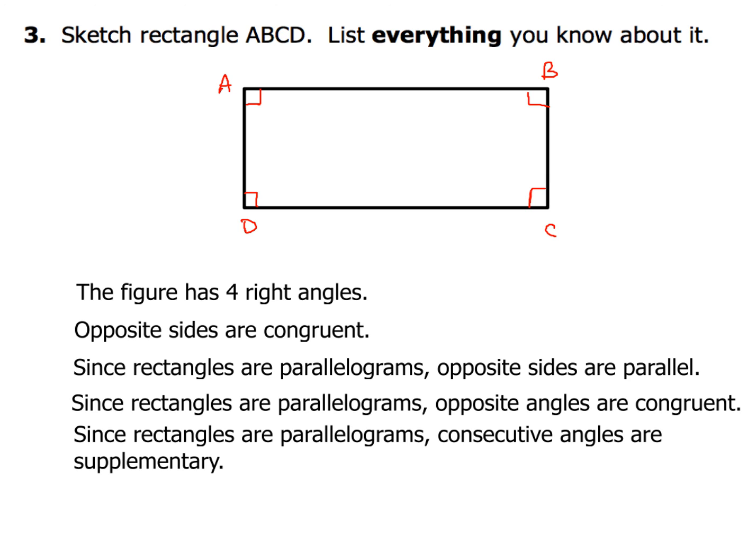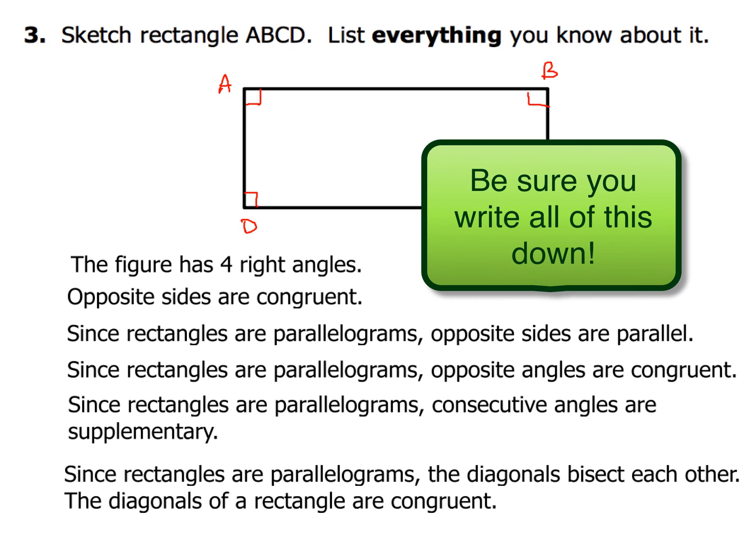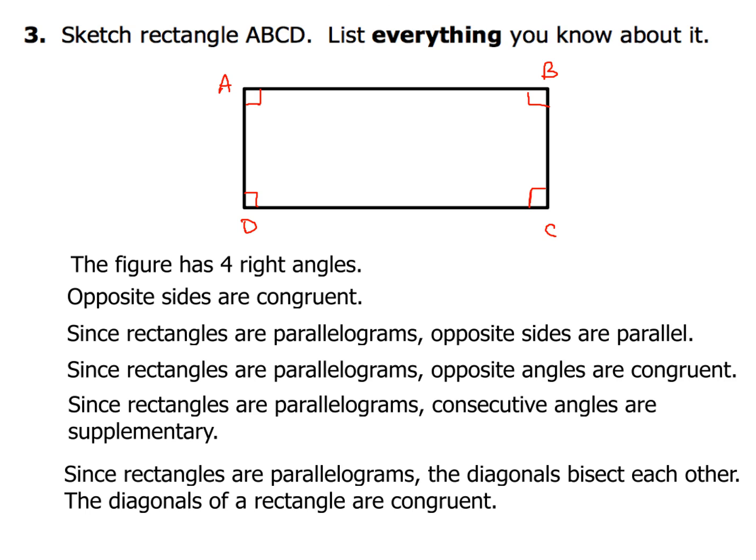Recall that in parallelograms, diagonals bisect each other — and for a rectangle specifically, the diagonals are also congruent. Those are all the properties we need to list for any given rectangle. That's a lot of material for this section, but we'll practice these characteristics in class to make sure everyone has them down.